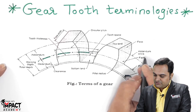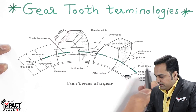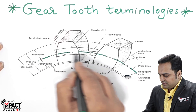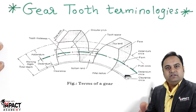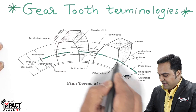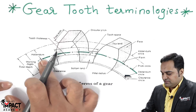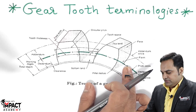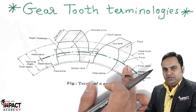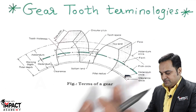The first one is the pitch circle diameter. The pitch circle diameter is the mean or average diameter, and at the same time this is the diameter which is taken as the reference in the case of gear teeth, because we have other two diameters as well.